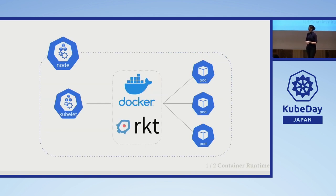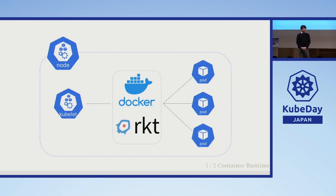When Kubernetes was born, the community decided to use Docker as the primary container runtime. Then CoreOS also introduced Rocket as an alternative. However, because there was no standardization back then, the implementation for the API client libraries of Docker and Rocket were internally embedded directly in the Kubernetes source code. And as the project grew, it became problematic to keep maintaining that code base within the same codebase, even though they are completely separated projects.